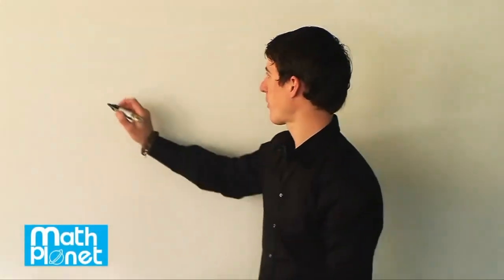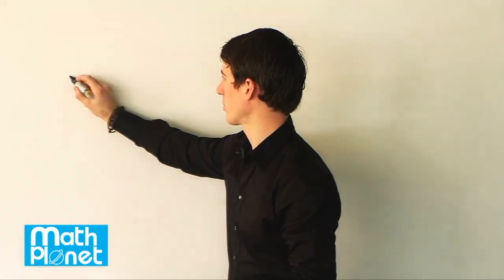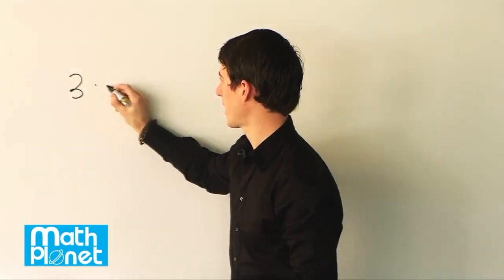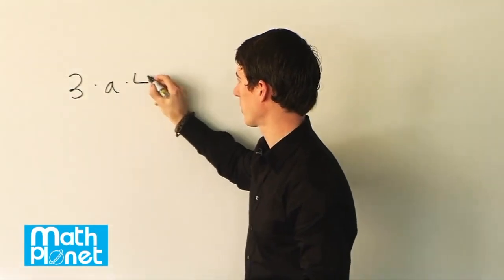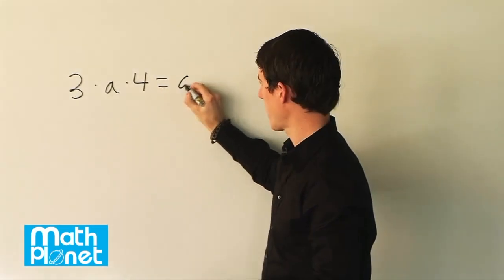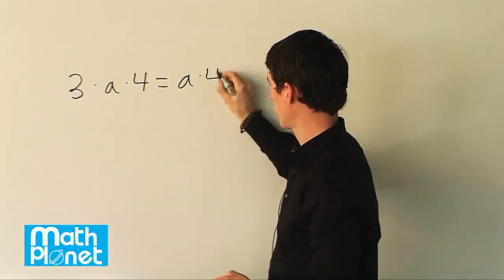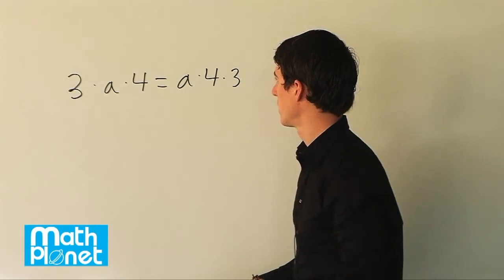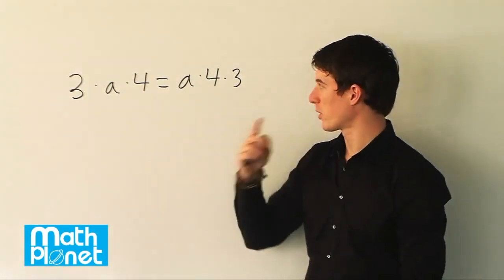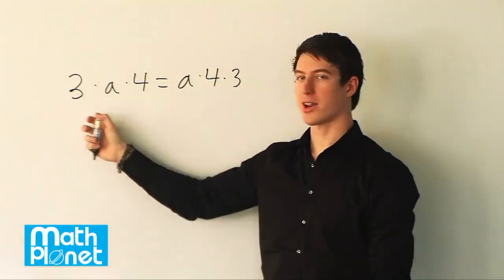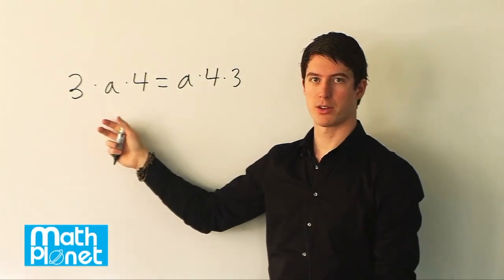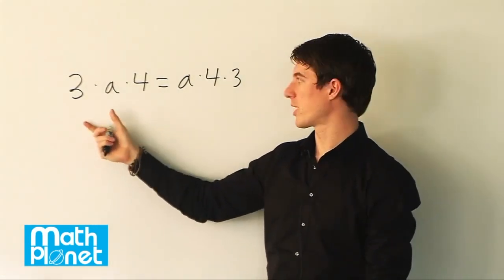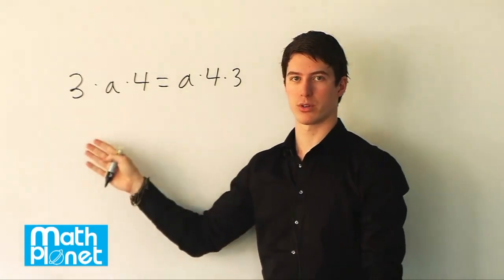We have the task of showing that the following equation holds true. The equation reads 3 times a times 4 is equal to a times 4 times 3. So to talk about this we just need to realize one simple thing. If you have factors or things that are multiplied by each other, you can write those or rewrite those in any way that you like, in any order that you like.